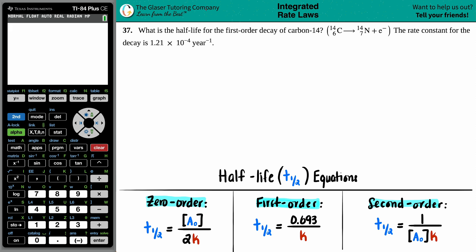Number 37. What is the half-life of the first-order decay of carbon-14? They give us a reaction with carbon-14, atomic number 6. This carbon-14 will break down and decompose into nitrogen, throwing away an electron. They tell us that the rate constant for this decay is 1.21 times 10 to the negative fourth per year.